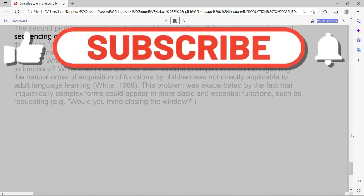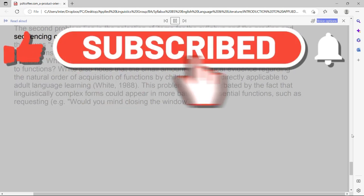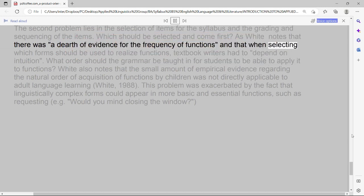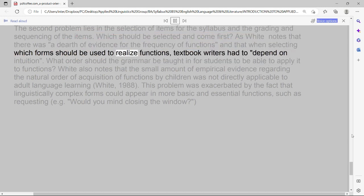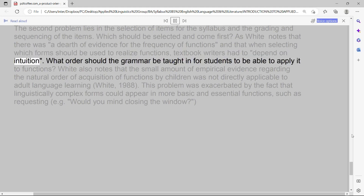The second problem lies in the selection of items for the syllabus and the grading and sequencing of the items. Which should be selected and come first? As White notes that there was a dearth of evidence for the frequency of functions, and that when selecting which forms should be used to realize functions, textbook writers had to depend on intuition. What order should the grammar be taught in for students to be able to apply it to functions?